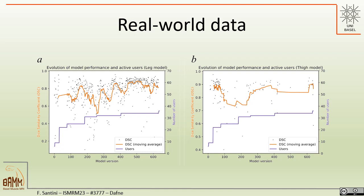This plot shows the real-world data acquired. On the bottom you can see how the user base grew over the months, and on the top part are the collected Dice scores with a moving average. There is an initial decrease in Dice scores when users brought new datasets with new contrasts, new resolutions, or new acquisition modalities into the model, and then the model adapted to this new kind of data and improved its performance again. A similar behavior was observed in the thigh dataset as well.